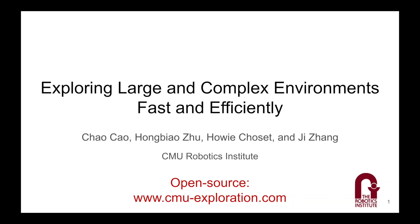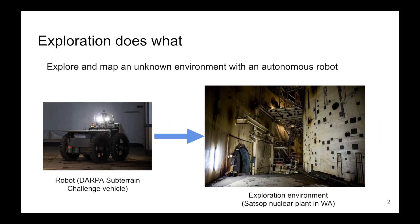We would like to present our work on autonomous exploration in large and complex environments. Exploration is about using an autonomous robot to explore and map a previously unknown environment. The image here shows one of the robots being used in the DARPA Subterranean Challenge and the environment of an abandoned nuclear power plant where the robot was sent to explore. This environment is challenging for autonomous exploration because it is three-dimensional and complex, containing cluttered space, narrow passages, and rough terrains. Our work is used in the competition to enable fast exploration of such an environment.